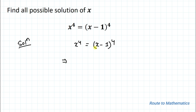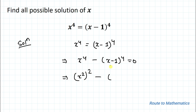Let's take (x minus 1) to the power 4 to the left hand side, so we have x to the power 4 minus (x minus 1) whole to the power 4 equals to 0. We can write x to the power 4 as (x squared) whole squared, and similarly (x minus 1) to the power 4 as ((x minus 1) squared) whole squared.